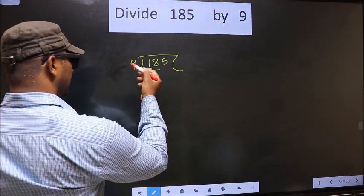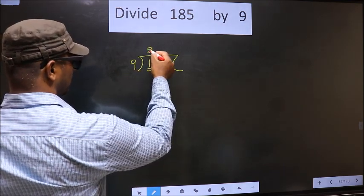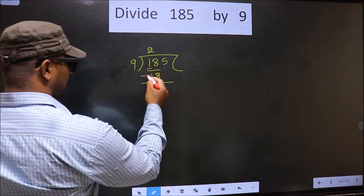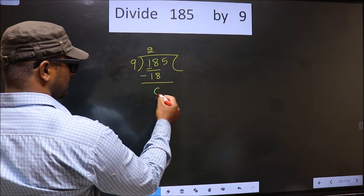When do we get 18 in the 9 table? 9 times 2 is 18. Now you subtract. 18 minus 18 is 0.